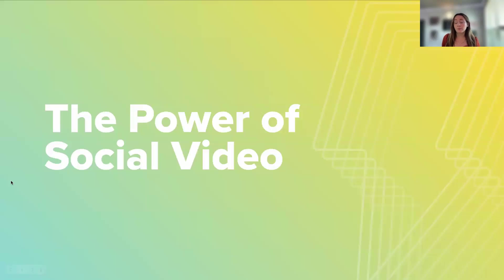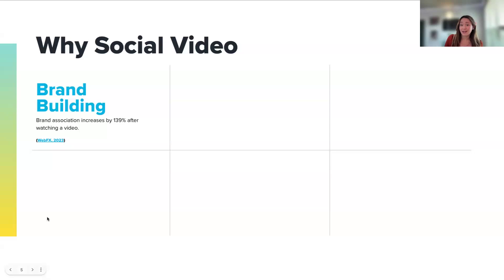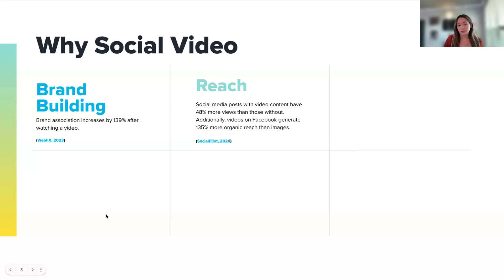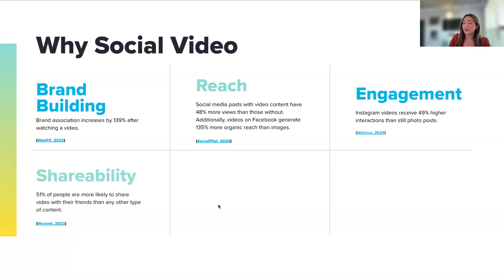Let's start by looking at why social video is important. Video isn't just another piece of content — it's one of the most effective ways to engage with your audience, and we have the facts to prove it. Brand association increases by 139% after someone watches a video. Social media posts with video get 48% more views than those without, and 135% more organic reach on Facebook than static images. Engagement is also much higher — 48% more interactions than still photos on Instagram. In fact, 51% of people are more likely to share videos with their friends than any other type of content.